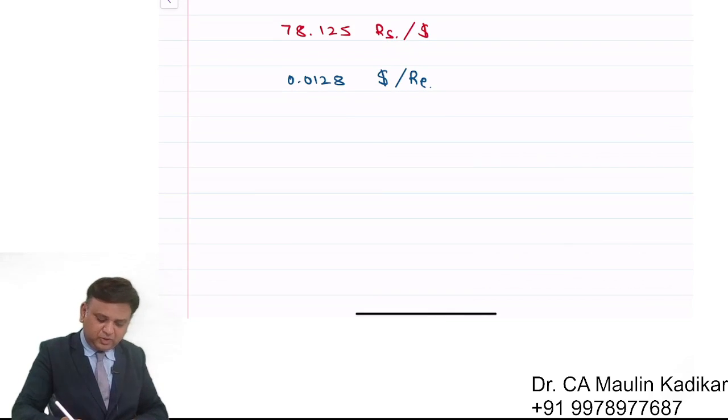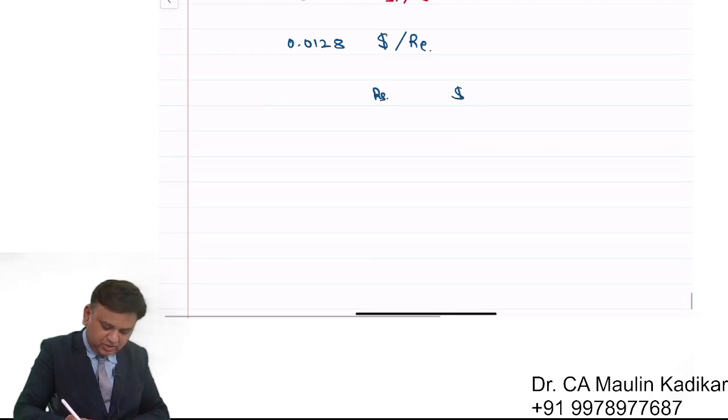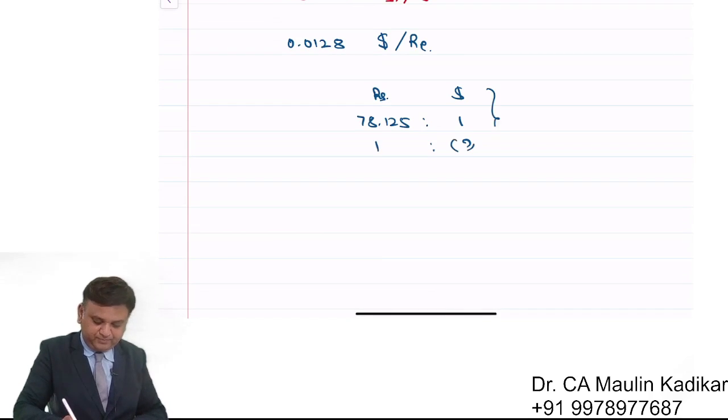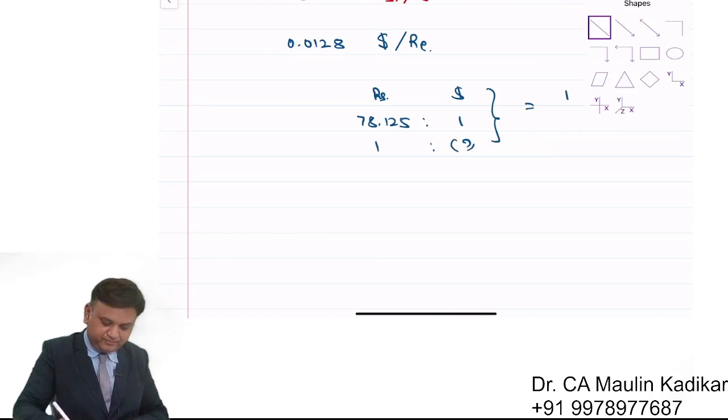The logic: rupees and dollar. 78.125 rupees is equal to 1 dollar, so how much dollar for 1 rupee? 1 into 1, divided by 78.125.